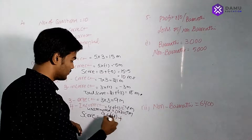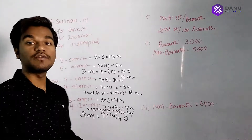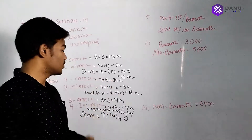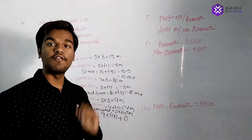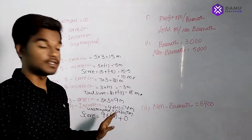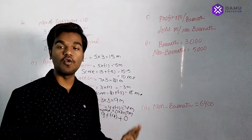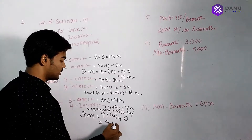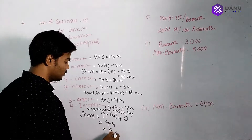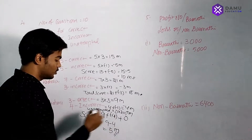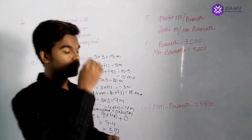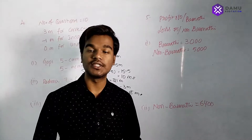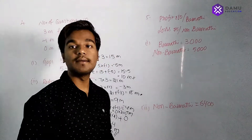For the 3 unattempted questions, 0 into 3 is 0 marks. So: 9 plus (minus 4) plus 0, which is 9 minus 4, equal to 5 marks. Rushme got 5 marks.